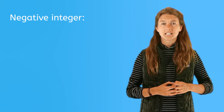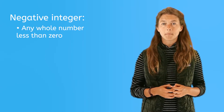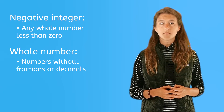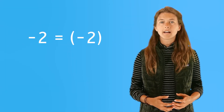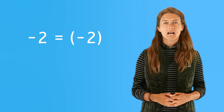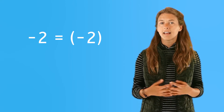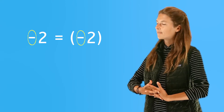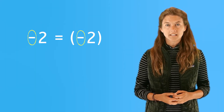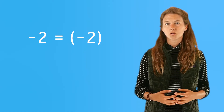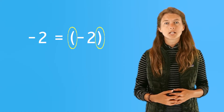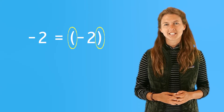A negative integer is any number less than zero. Remember, whole numbers or integers are numbers without fractions or decimals. By the way, zero is neutral and is neither positive nor negative. When we write negative numbers, we must always use a negative sign to the left of the number. Both of these show negative two. When writing negative numbers in math sentences like addition equations, we also use parentheses to make sure we don't confuse a negative number with subtraction.